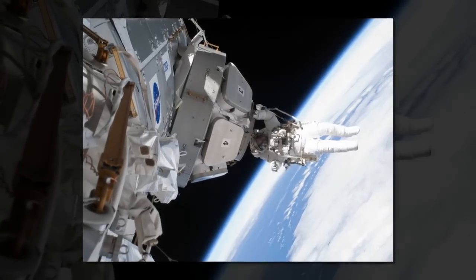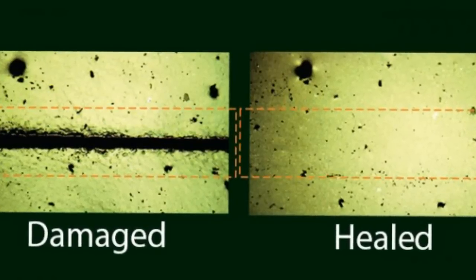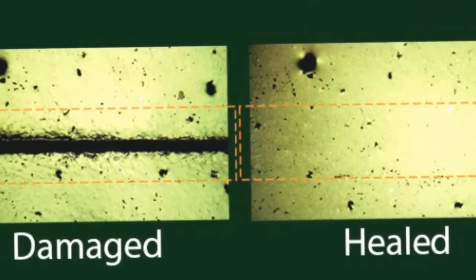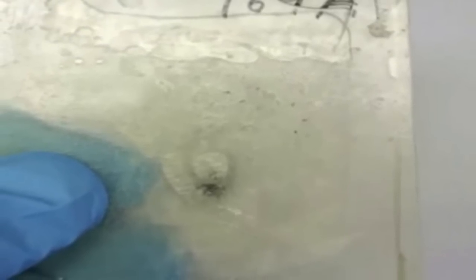The resin must be put between a polymer sandwich to stay liquid, but once the walls are breached by something small and speedy like a bullet or a flying piece of space debris, it reacts with oxygen and forms a clog.